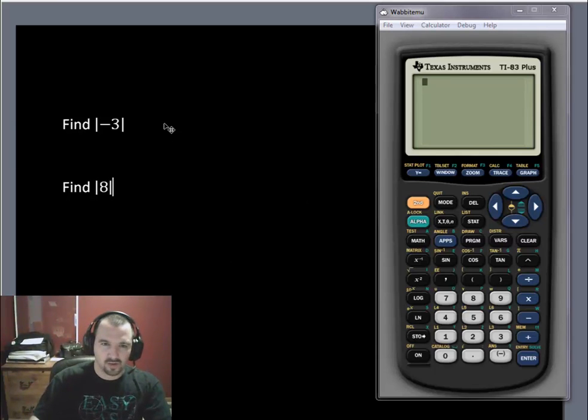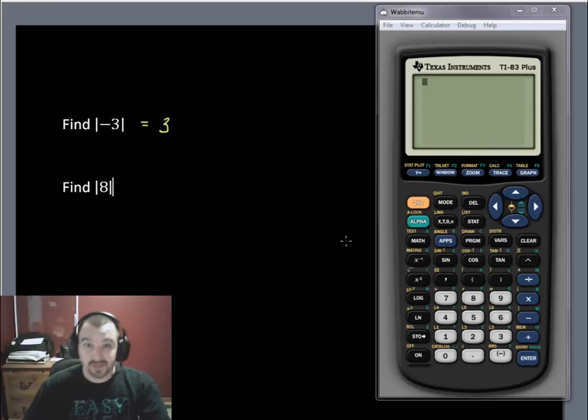You might know, right off the top of your head, that the absolute value of negative 3 is, in fact, 3, because the absolute value stands for the distance between the number inside and zero. And you take three steps in order to get zero from negative 3.